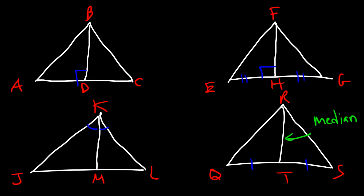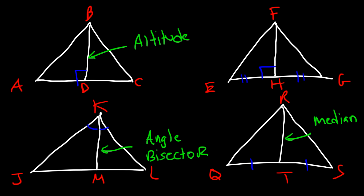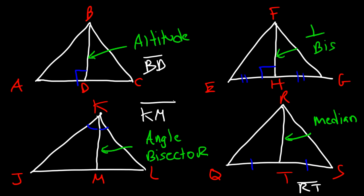Which one is the altitude? An altitude forms right angles, so BD is an altitude. Which one is the angle bisector? This one is straightforward because it bisects angles — so KM is the angle bisector. The last one is the perpendicular bisector, which is FH. To summarize: altitudes and medians are line segments, an angle bisector is a ray — it starts from K and points towards M — and the perpendicular bisector is a line.